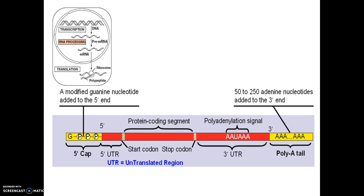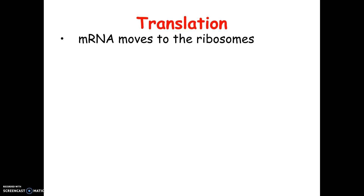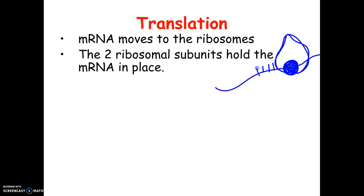Here's another picture showing the 5' cap on the left and the poly-A tail on the right, with all the bases in the middle. Our second step is translation. The mRNA leaves the nucleus and goes to the ribosome. Ribosomes are made of two pieces — a little piece and a bigger piece — and they hold the mRNA in place so it can be read. A ribosome is more like a piece of machinery helping the process going on outside of it.